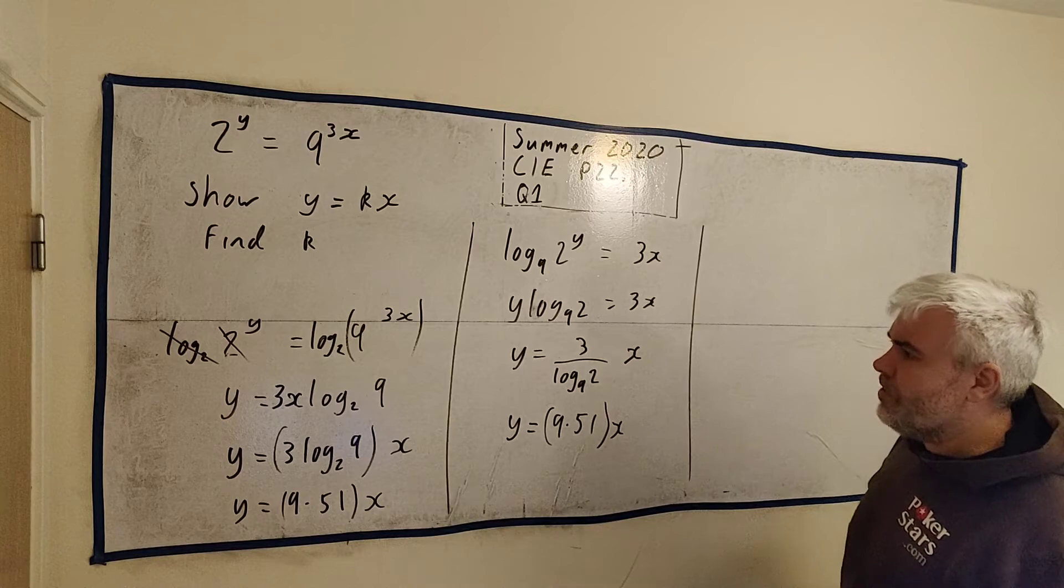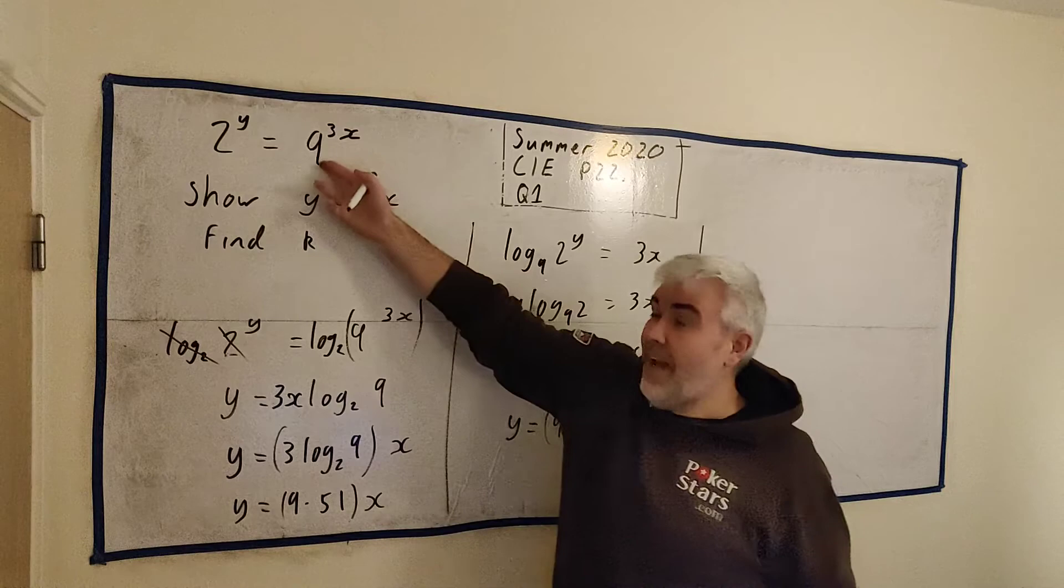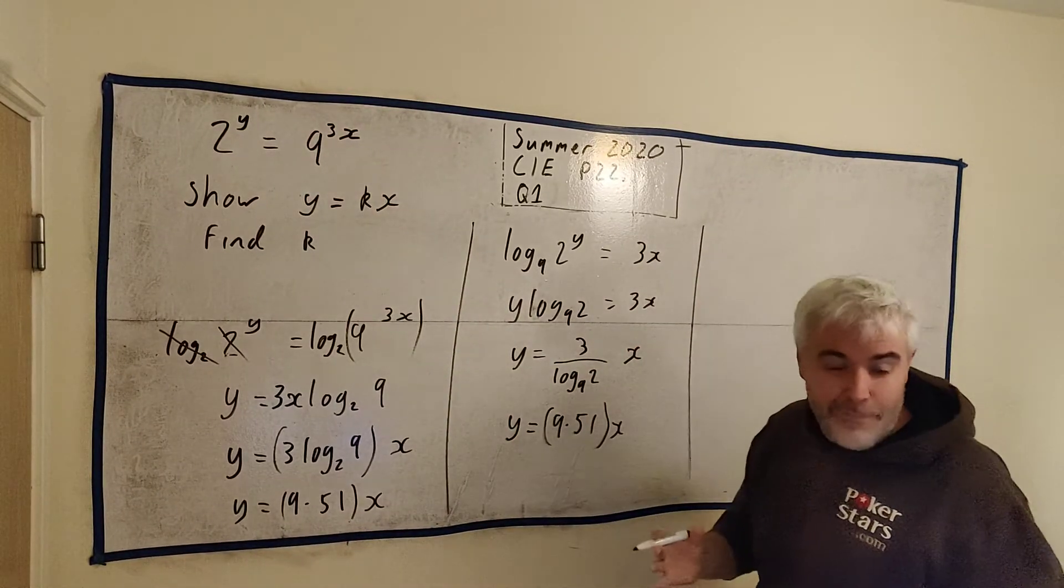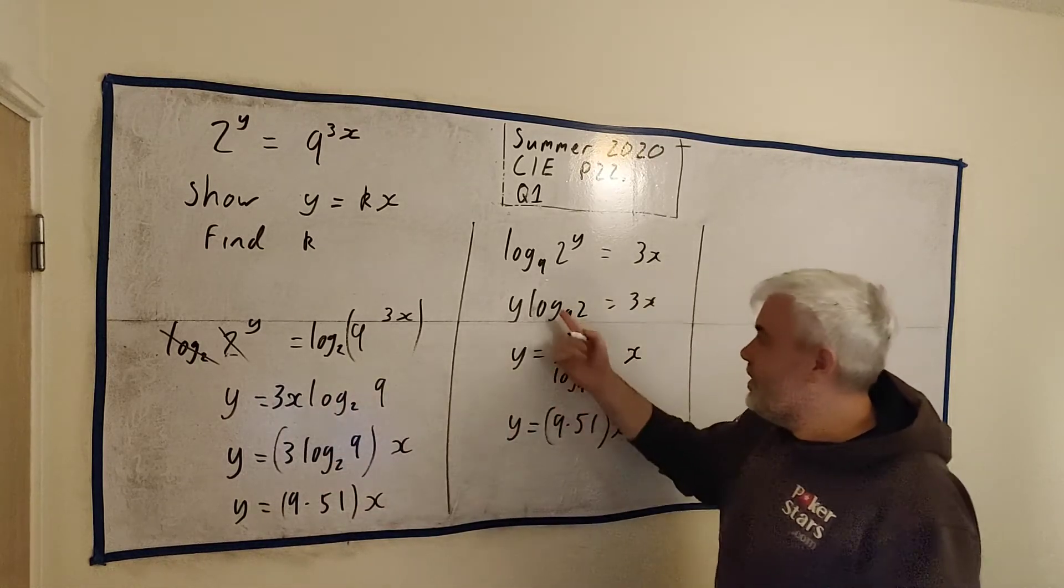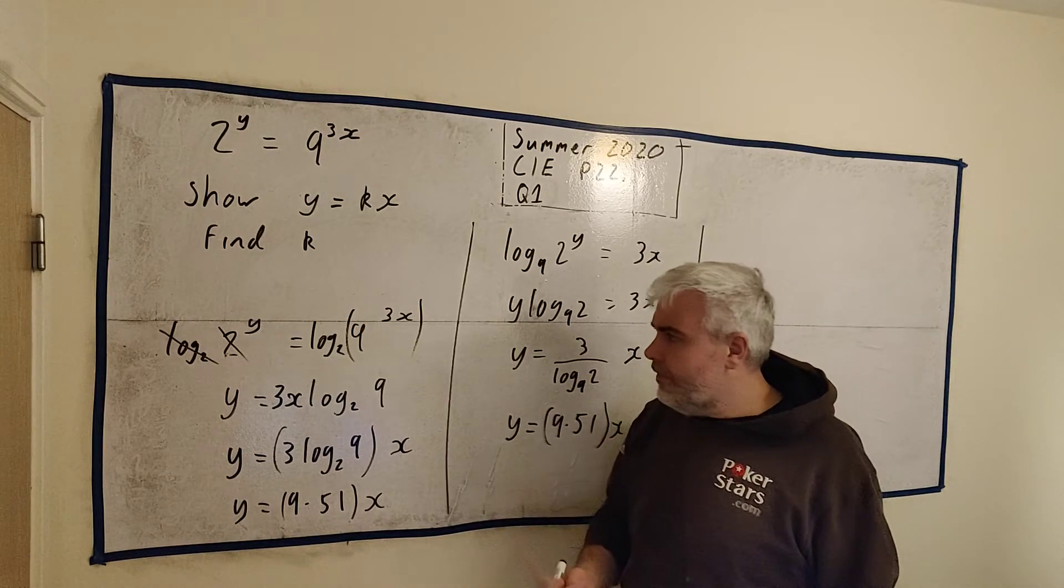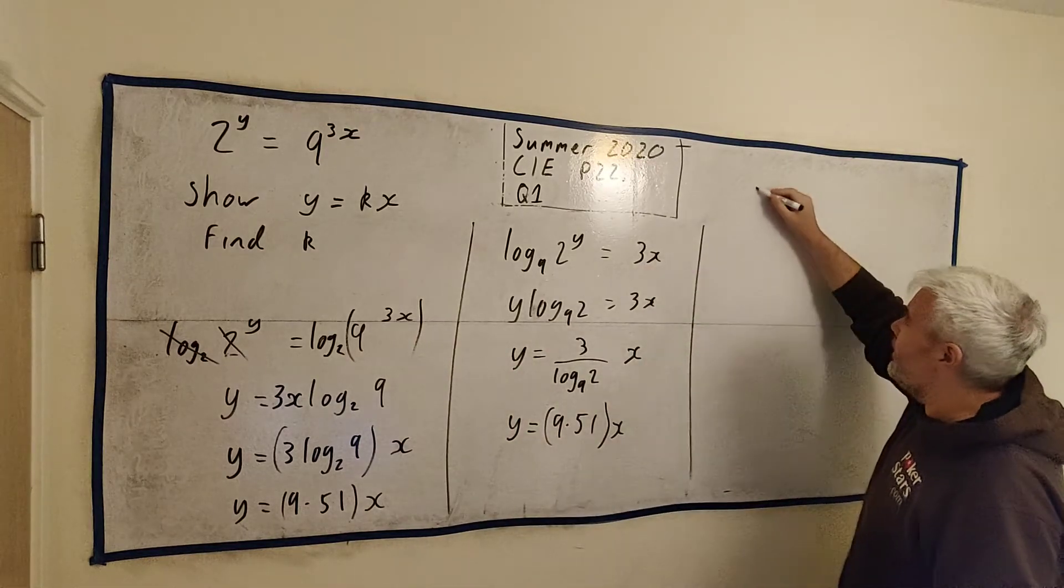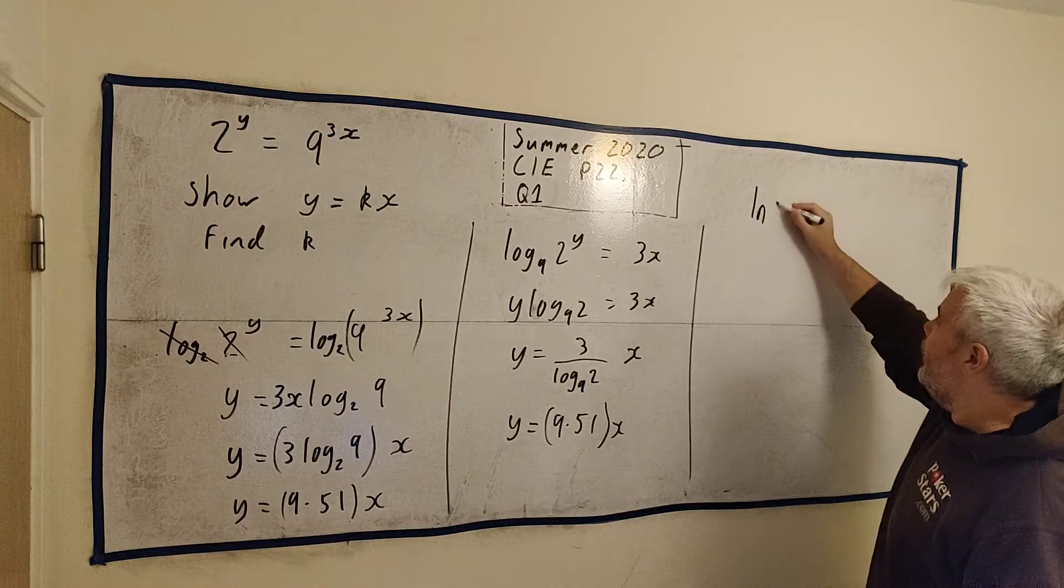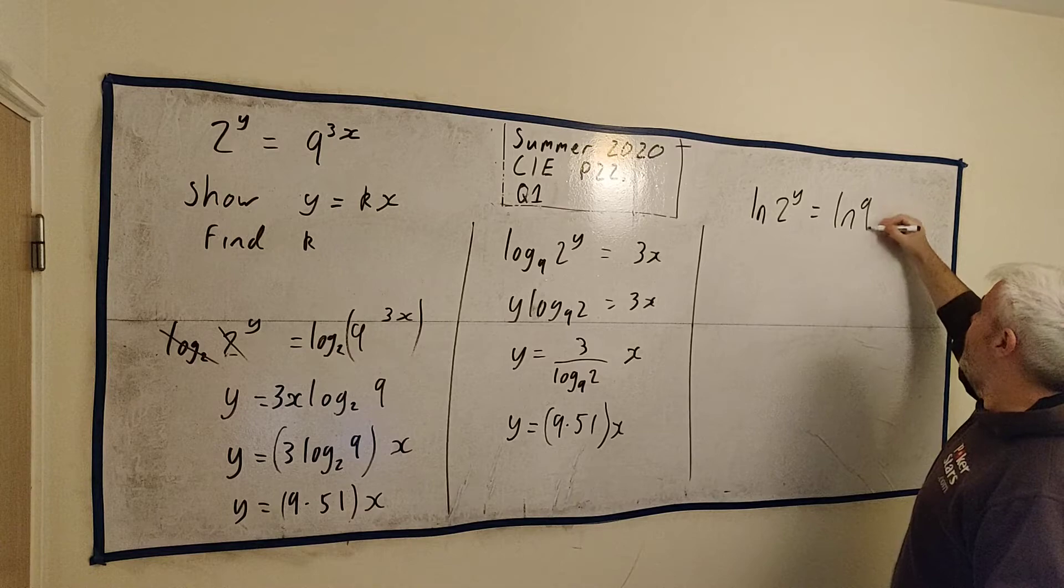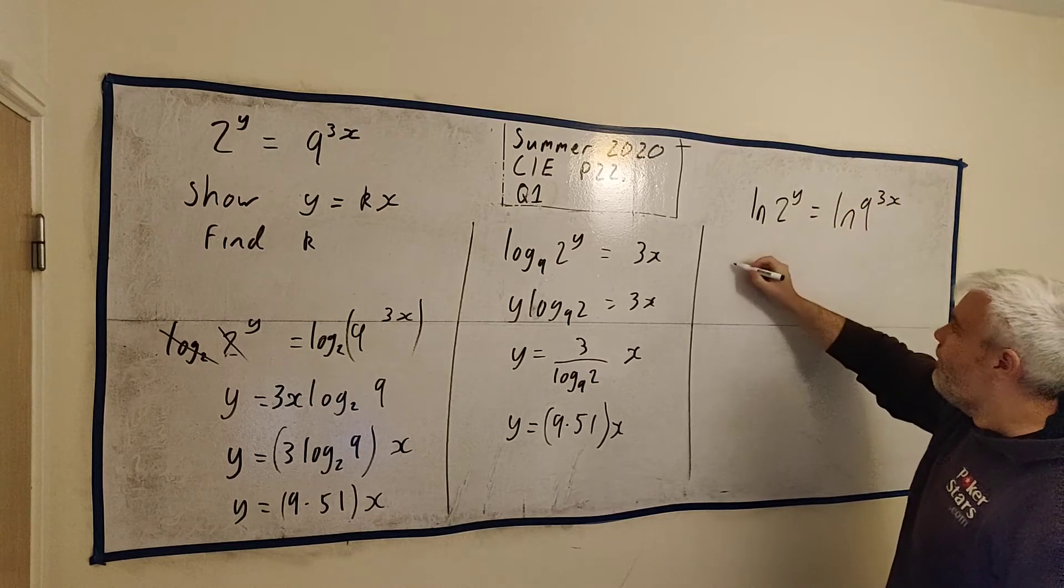And the way I actually did this question, I'd say this is the best way, the first one here. But the way I did it, I just took any log I wanted. And because calculators often only have, actually most of them have any log you want, log to the base 2, log to the base 9. But a lot of calculators only have log to the base 10, log to the base 2, and log to the base e, which we write like this, the natural log. So that's the one I actually used. I took the natural log of both sides is equal to the natural log of 9 to the power of 3x.